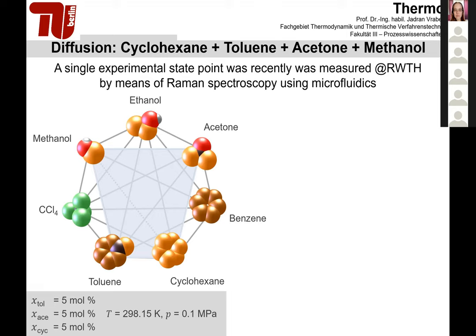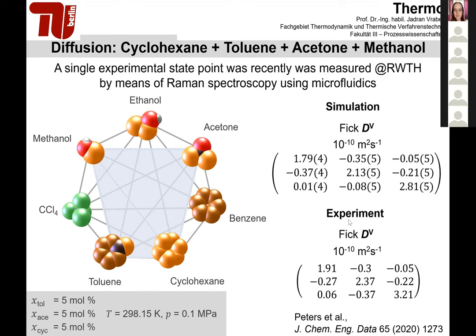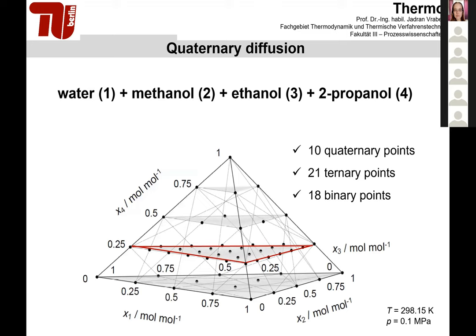Let me show results for a quaternary mixture from these seven components: methanol, toluene, cyclohexane, and acetone at one composition. Recently, experimental work from RWTH Aachen was published containing one data point for this mixture. We were able to re-simulate exactly that mixture, and comparing the nine elements of the Fick diffusion matrix for this quaternary mixture, the agreement is really quite good.